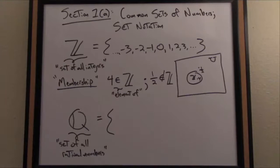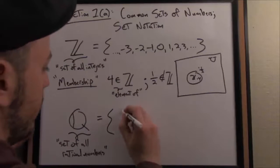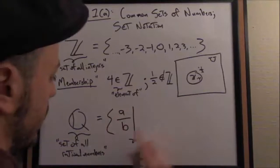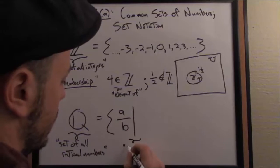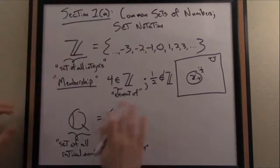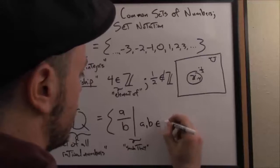We can write all the elements in that set in the following fashion. Q consists of all the elements that look like a divided by b, and this vertical line in set builder notation is read 'such that.' This defines membership, this criterion: a and b are integers.